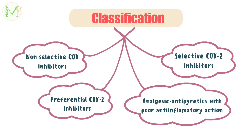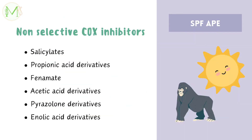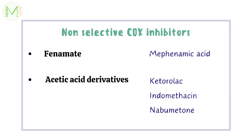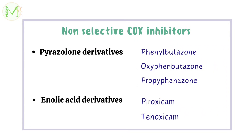Let's see what drugs come under each class. First, non-selective COX inhibitors generally inhibit both COX-1 and COX-2. The drugs of this class are salicylates, propionic acid derivatives, phenamates, acetic acid derivatives, pyrazolone derivatives, and enolic acid derivatives. The mnemonic here is SPF-APE — imagine an ape applying sunscreen with SPF 50 non-selectively. Aspirin belongs to salicylates. Ibuprofen, naproxen, ketoprofen, and flurbiprofen are propionic acid derivatives. Mefenamic acid is under the phenamate group. Ketorolac, indomethacin, and nabumetone are acetic acid derivatives. Phenylbutazone, oxyphenbutazone, and propifenazone are pyrazolone derivatives. Piroxicam and tenoxicam are enolic acid derivatives.